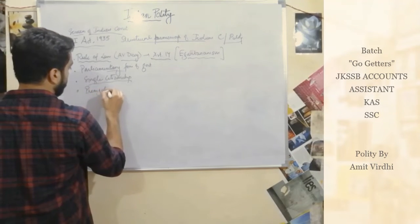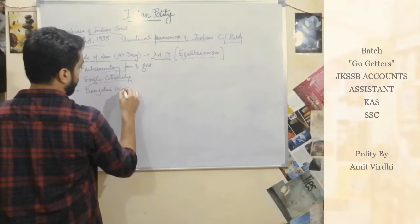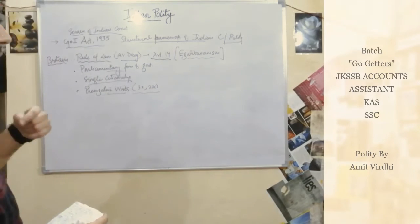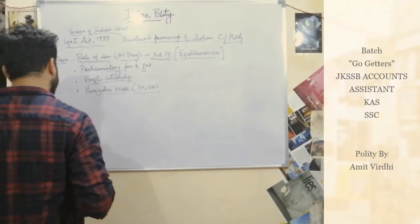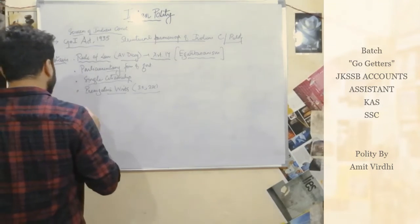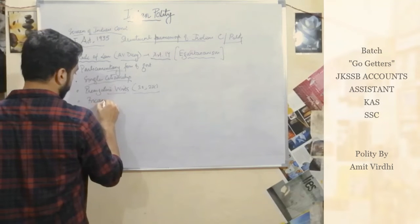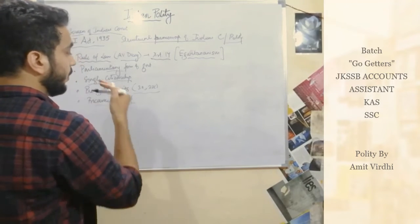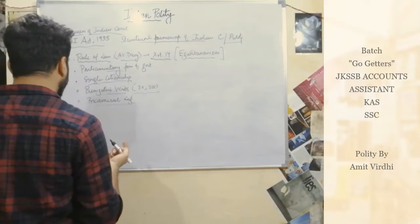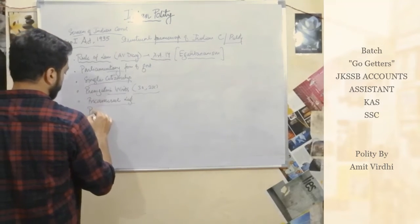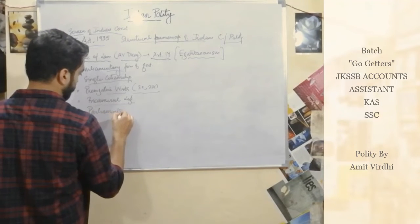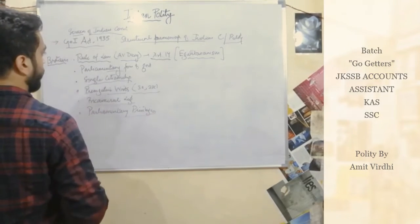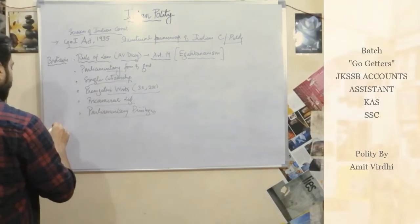From Britain we also have prerogative writs, which we will discuss under Articles 32 and 226 in the next class, and the concept of Bicameral Legislature.